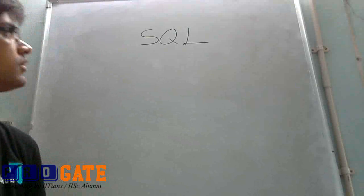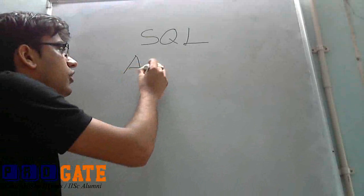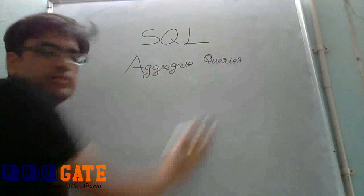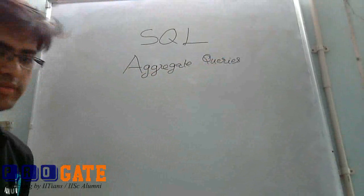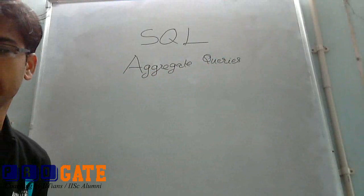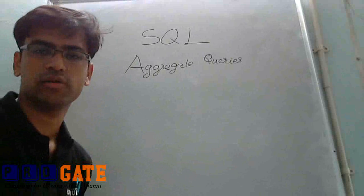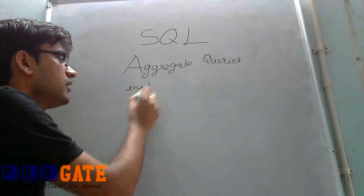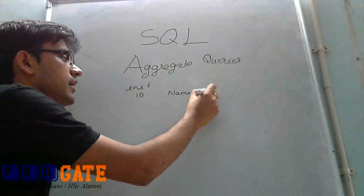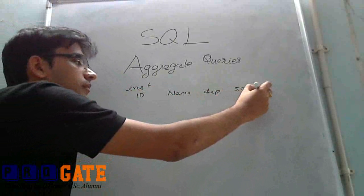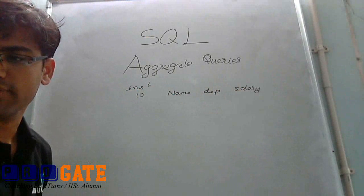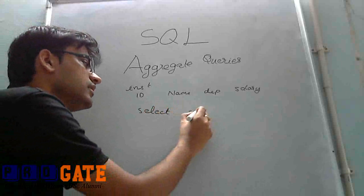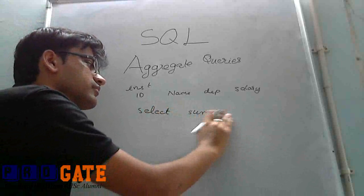After Cartesian products, the next important part of SQL is aggregate queries. In this topic, we'll see how we can group certain attributes of a table together and then perform group operations on them. For example, we have an instructor table with id, name, department, and salary. To get the sum of all salaries, we use SELECT SUM of salary FROM instructor.